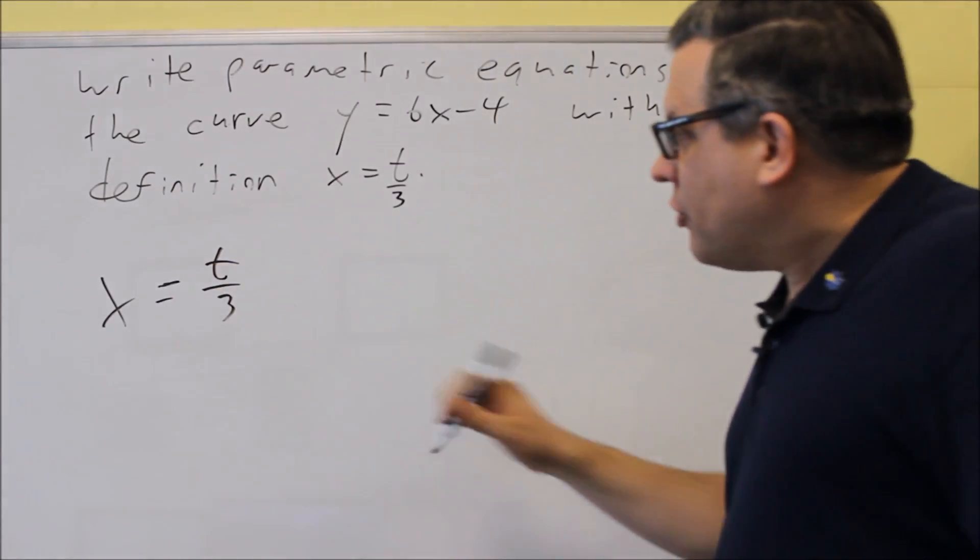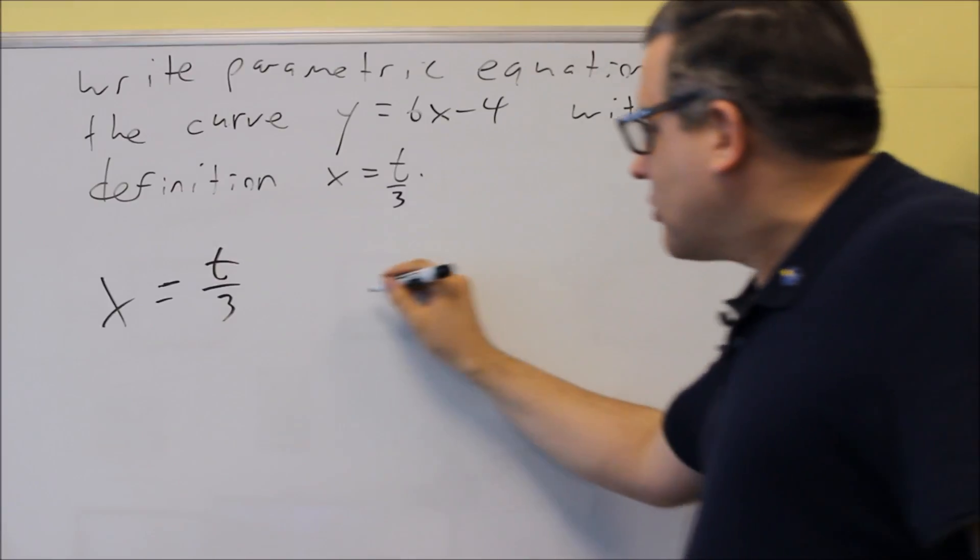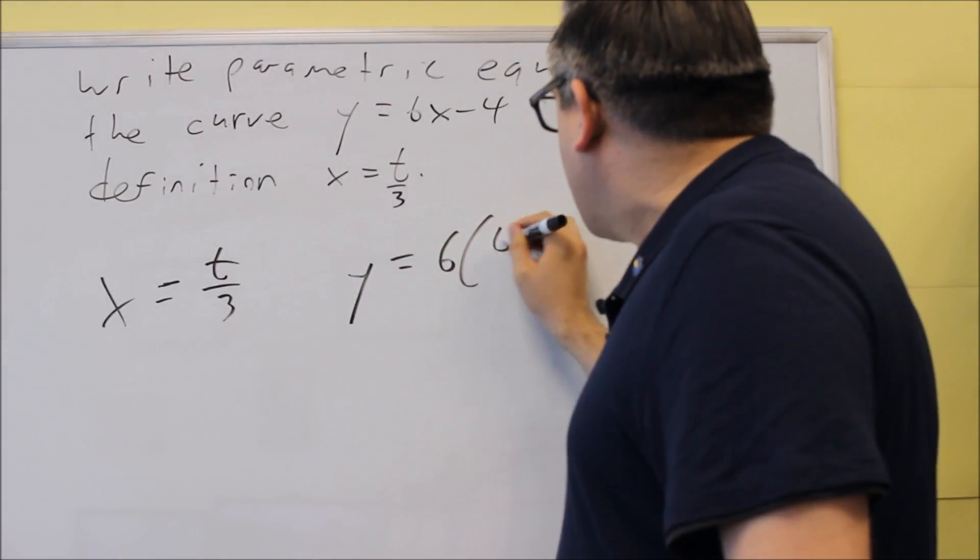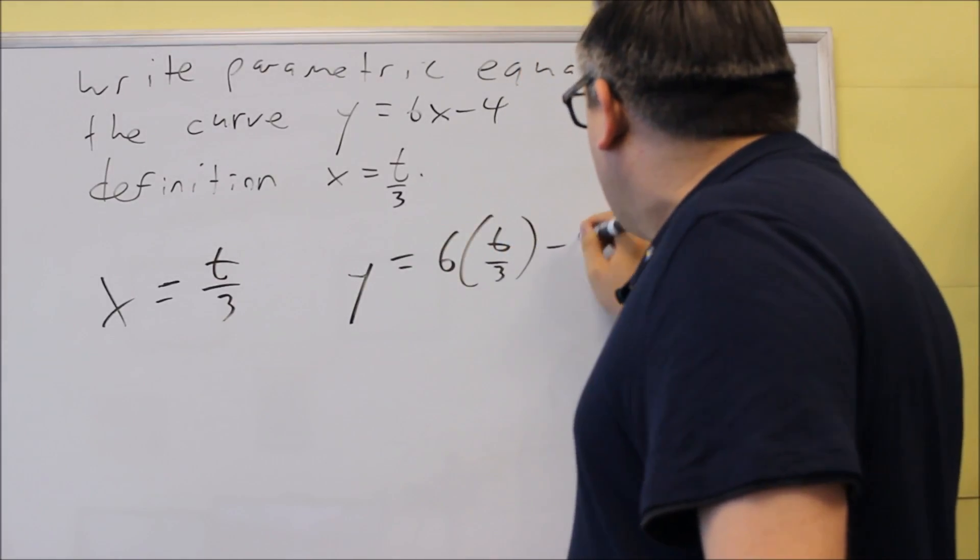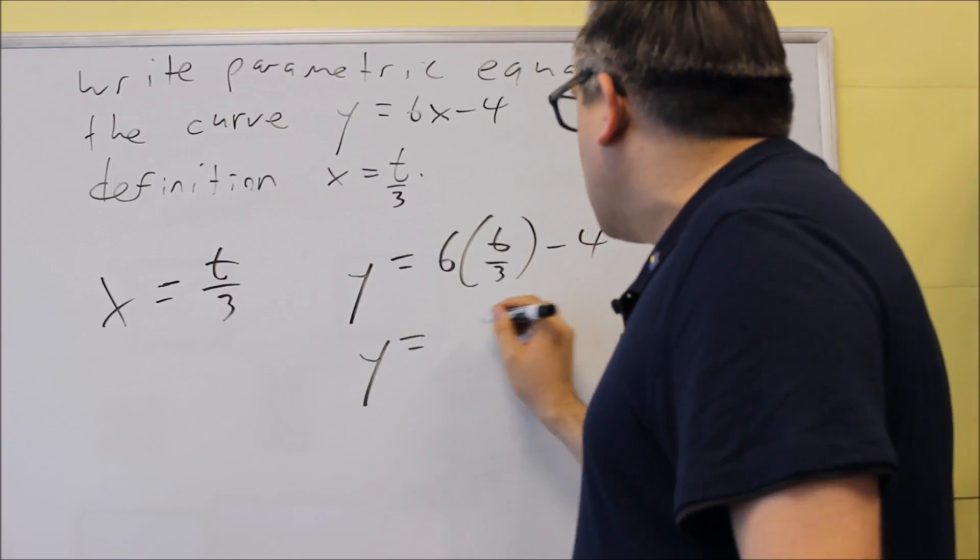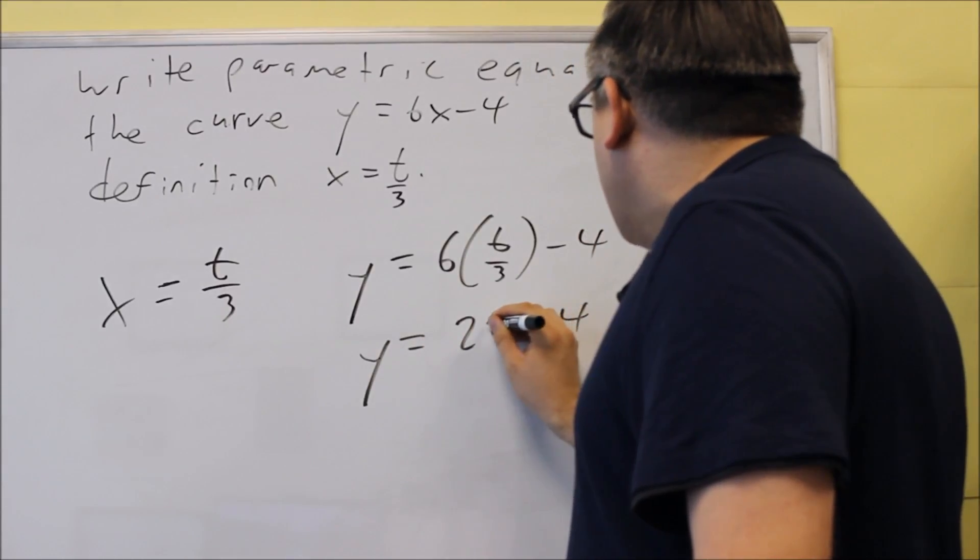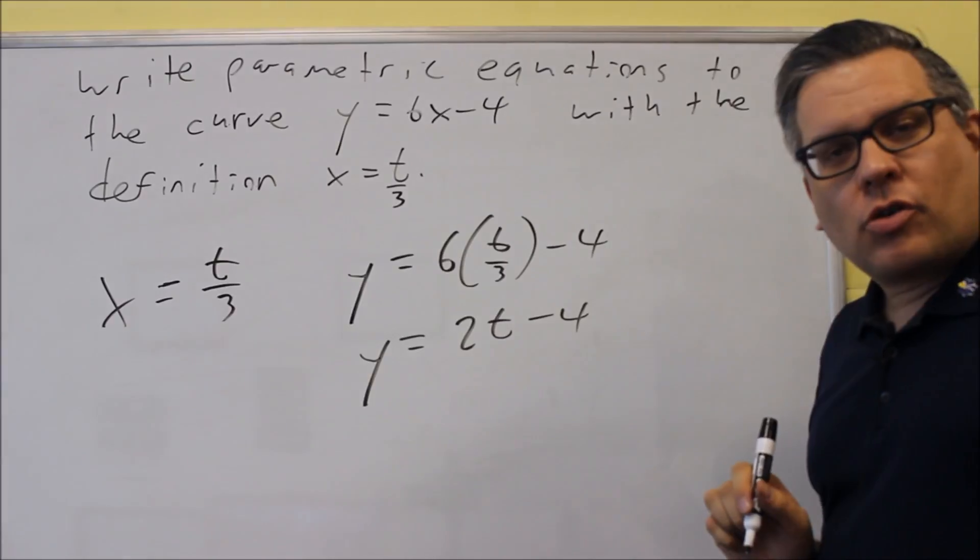For the other one, just plug this in for x. We have y = 6(t/3) - 4. So y = 2t - 4. Now there's our two parametric equations.